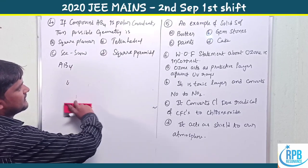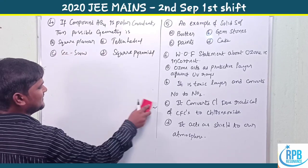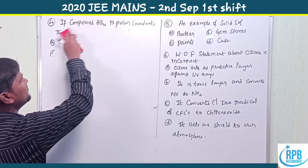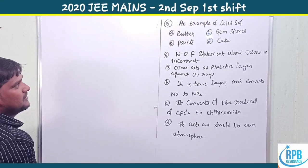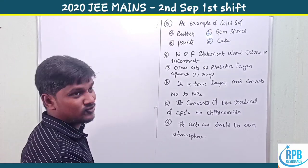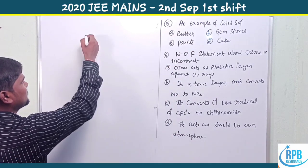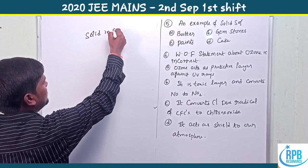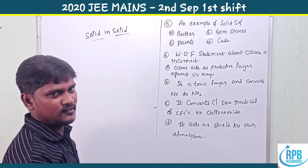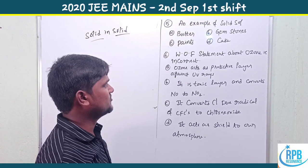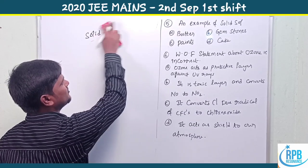Question 5: Which is an example of solid-in-solid composition? Butter is not solid-in-solid. Gemstones are solid-in-solid — solid phase dispersed in a solid medium. Gemstones are the best examples of solid-in-solid colloids.